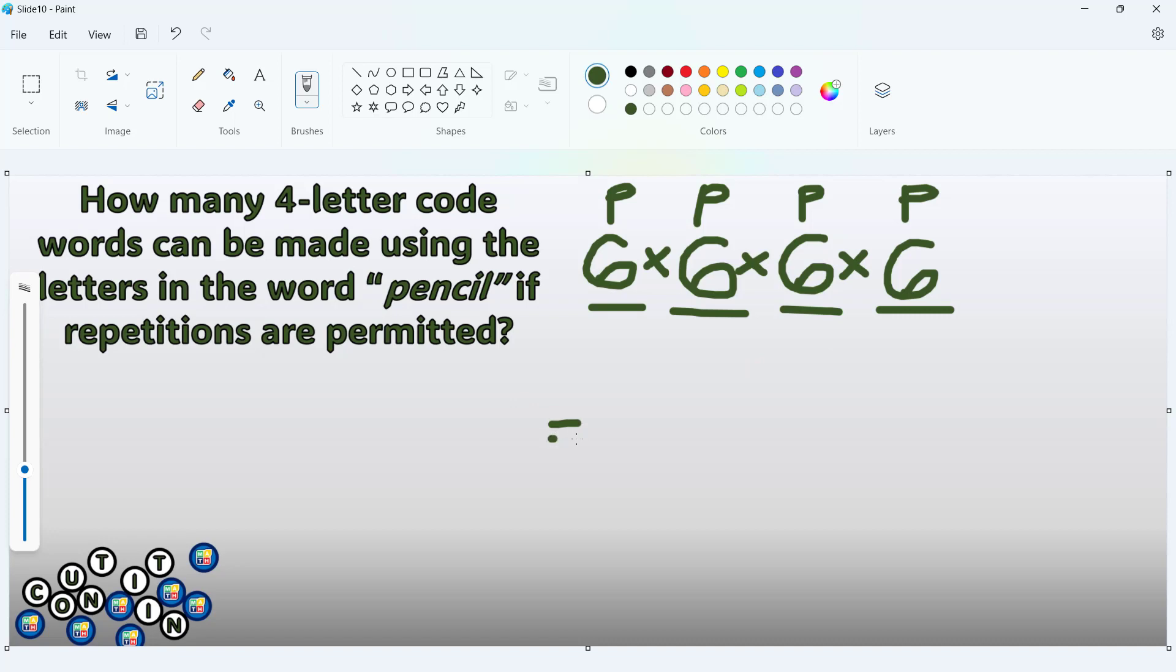So how many 4-letter code words can be made using the letters in the word pencil? You have 6 times 6 times 6 times 6. That would mean we have 1,296 possible 4-letter code words using all the letters in the word pencil. This is the answer for this situation.